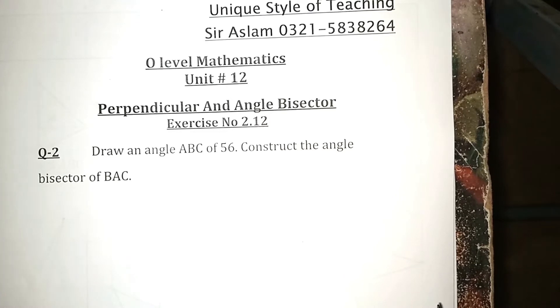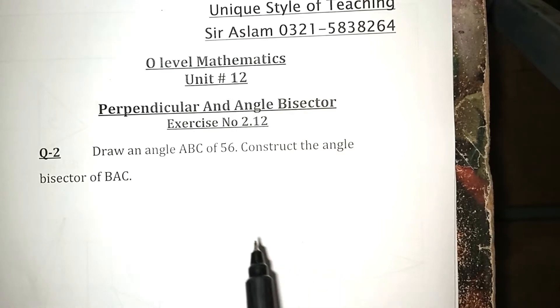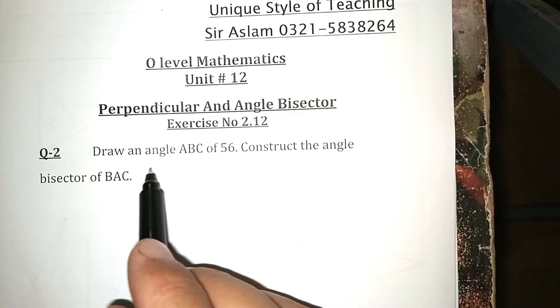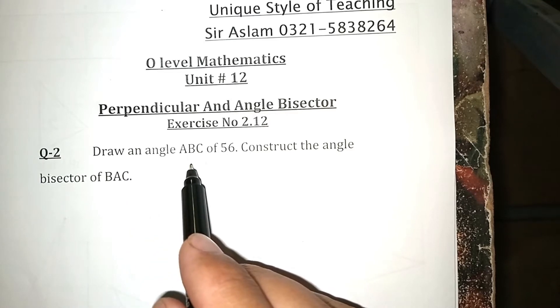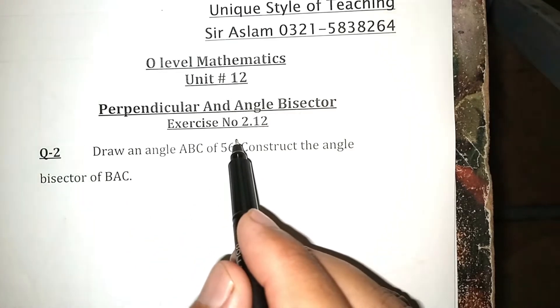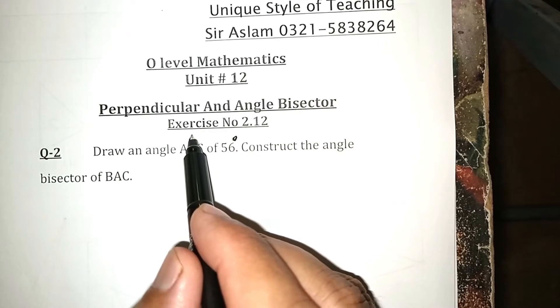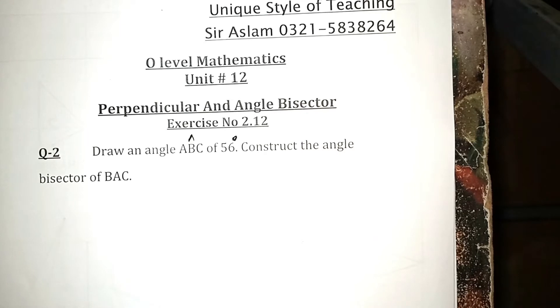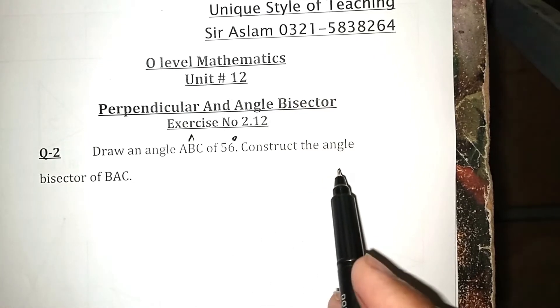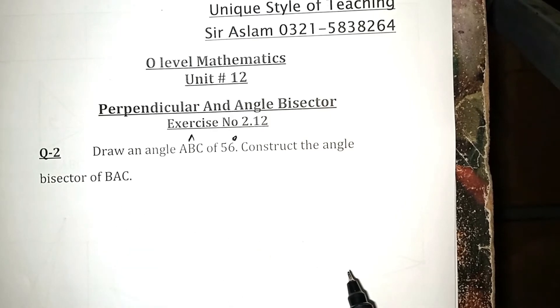I have selected this question from unit 12 of the O1 book. Draw an angle ABC 56 degrees. This means the angle bisection or angle of 56 will be at B. Construct the angle bisector BAC.